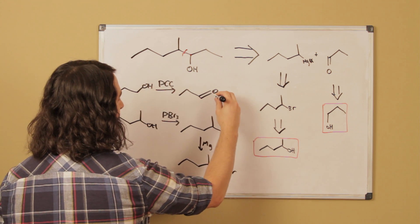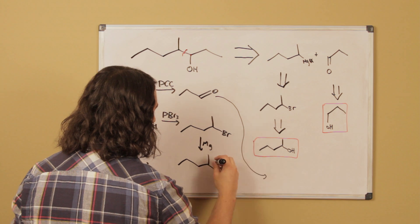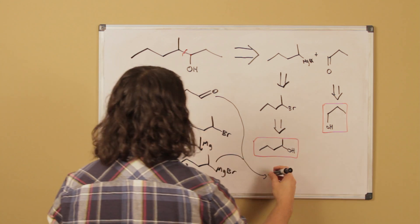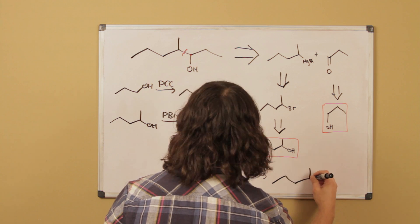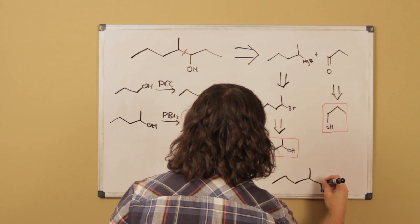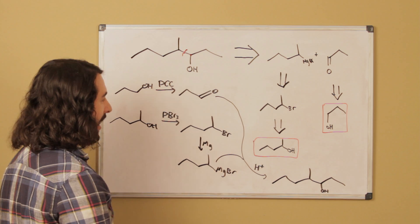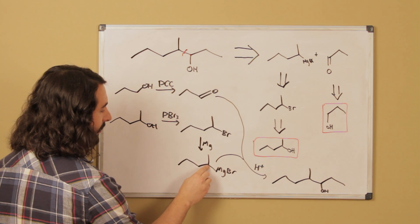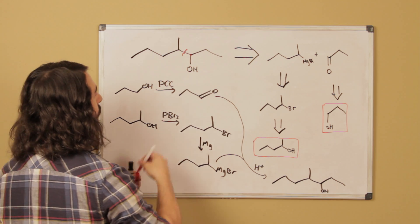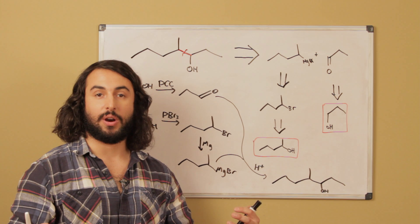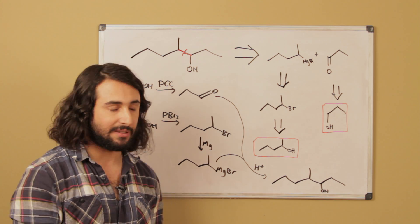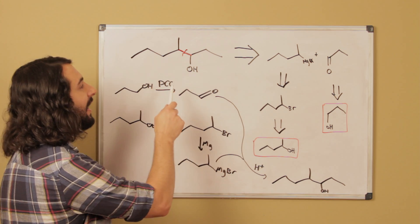And then now we know if we take this guy and this guy and combine them and then do some acidic workup, we will get our product. Because this carbon would attack that carbon, which would make this bond that we initially broke apart in the first step of the retrosynthetic analysis.